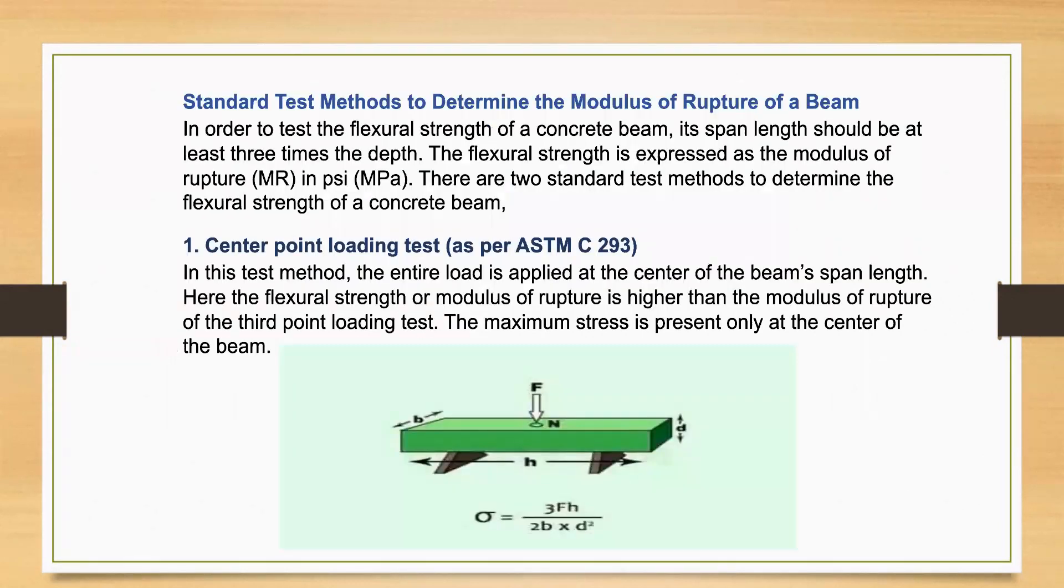The standard test methods to determine the modulus of rupture of a beam: In order to test the flexural strength of a concrete beam, the span length should be at least three times the depth. The flexural strength is expressed as the modulus of rupture. There are two standard test methods to determine the flexural strength of a concrete beam.